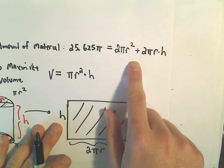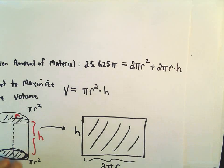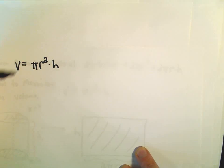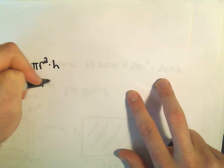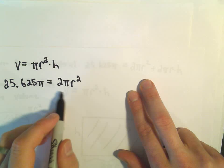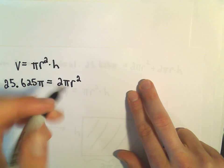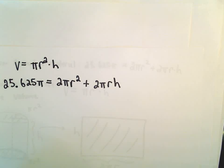And now I've got an equation relating R and H, and I can solve for one of these. So let's rewrite our equations here a little bit. So the thing we want to maximize is the volume, and that's πR²H. We've got 25.625π, that was the amount of material. The amount of material on our can was the top and bottom, so that's 2πR². And then plus the material on the side, which is 2πRH.